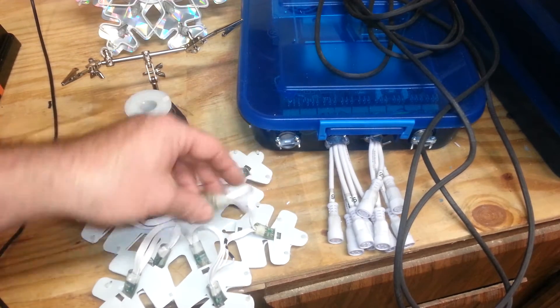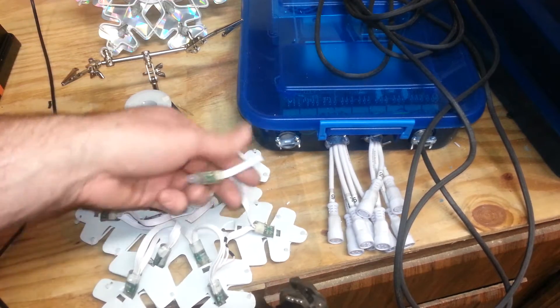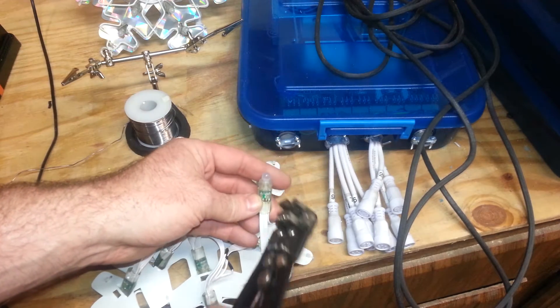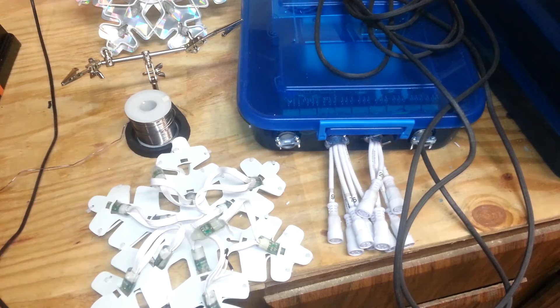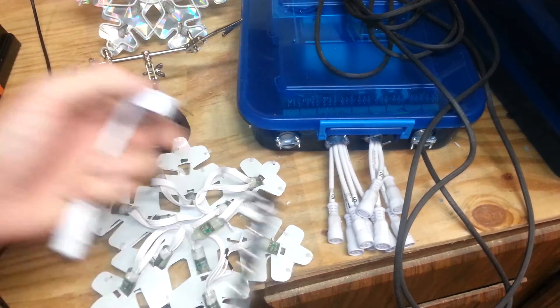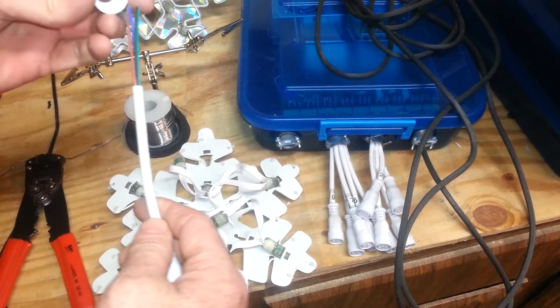So first thing I've got, I've got my RGB snowflakes here. These are just dumb nodes, and all I'm going to do here is make a connection from here to one of my waterproof four core pigtails. So let's get started.